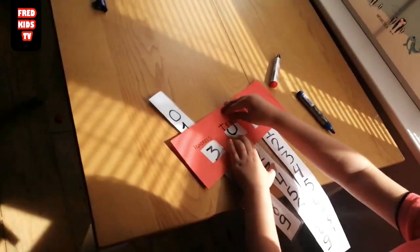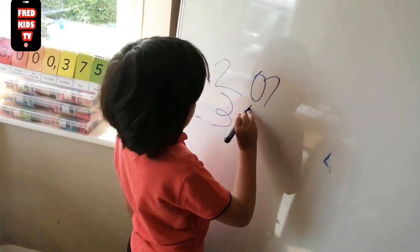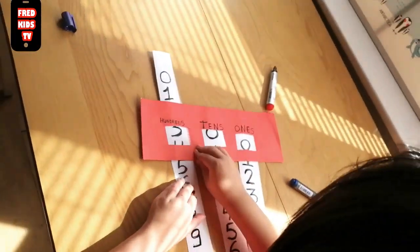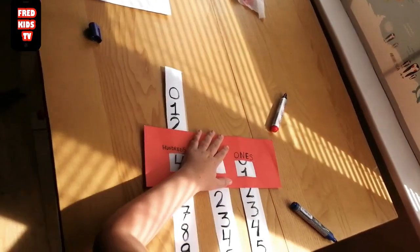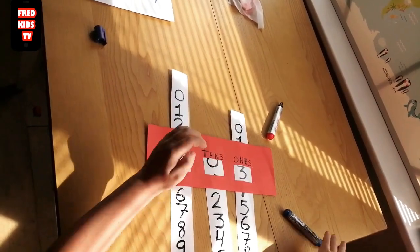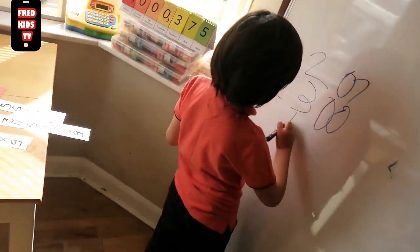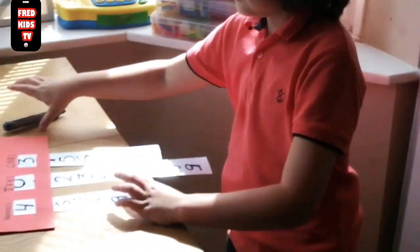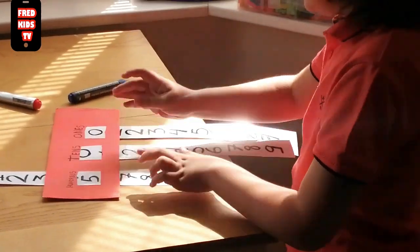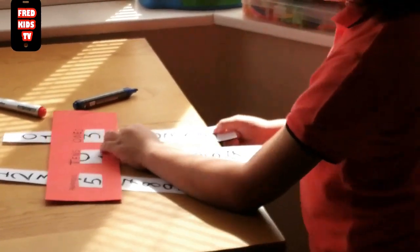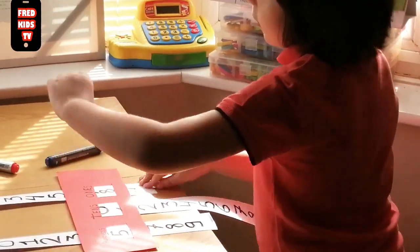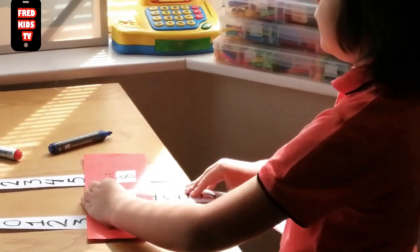Next one is three hundred. Can you write that on your board? Which number do you want to write? Three hundred. And also four hundred and four hundred and three. So five hundred and eight — five hundred.